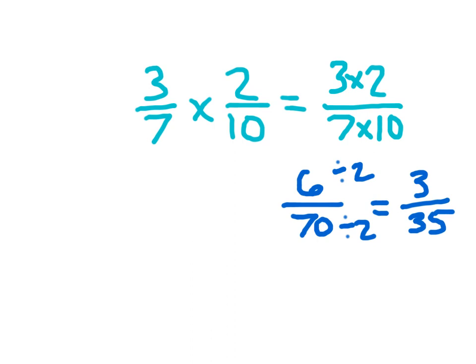At that point, we know that we are done, and in simplest form, because 35 is not divisible by 3. 3 and 5 is 8, and since 8 is not divisible by 3, 35 is not divisible by 3. So we have 3 thirty-fifths as our product of 3 sevenths and 2 tenths.